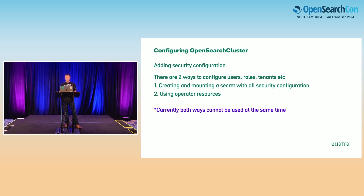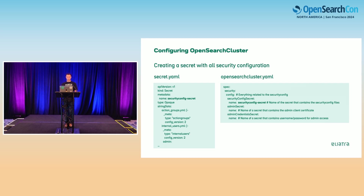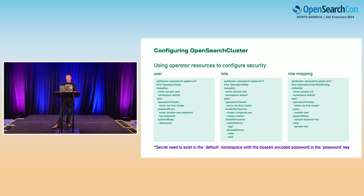The security configuration for the OpenSearch cluster in operator can be done in two ways. The first way — the original way — is to create a secret with all the configuration: action groups, internal users, roles, role mappings, and so on, and then under the security config section reference that secret. The second, newer way is to use the CRDs created with the operator — OpenSearch user, role, role bindings, and so on. Just don't use both at the same time because they will overwrite each other.